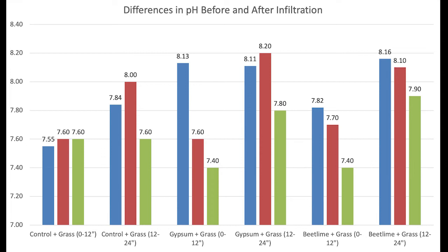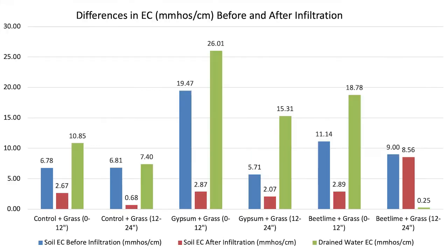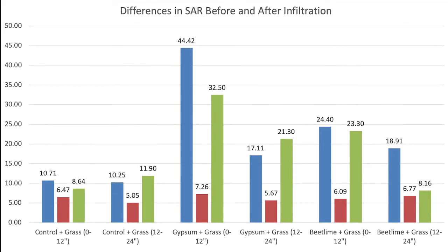The takeaways from this demonstration are that there were no noticeable differences in pH. Five out of the six samples including the control had EC levels lowered 60.62 percent to 90.01 percent, and the reduction in soil SAR levels ranged between 39.64 percent to 83.65 percent.